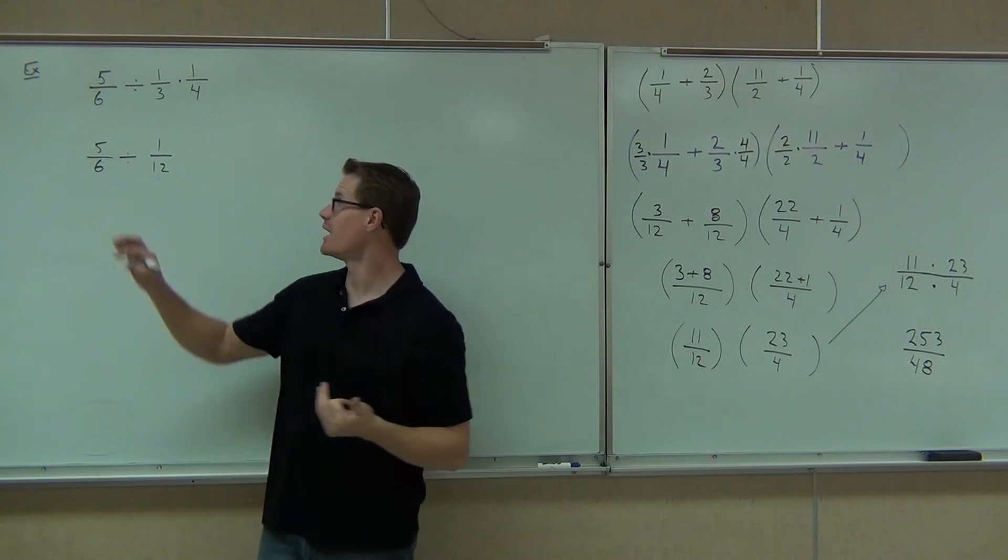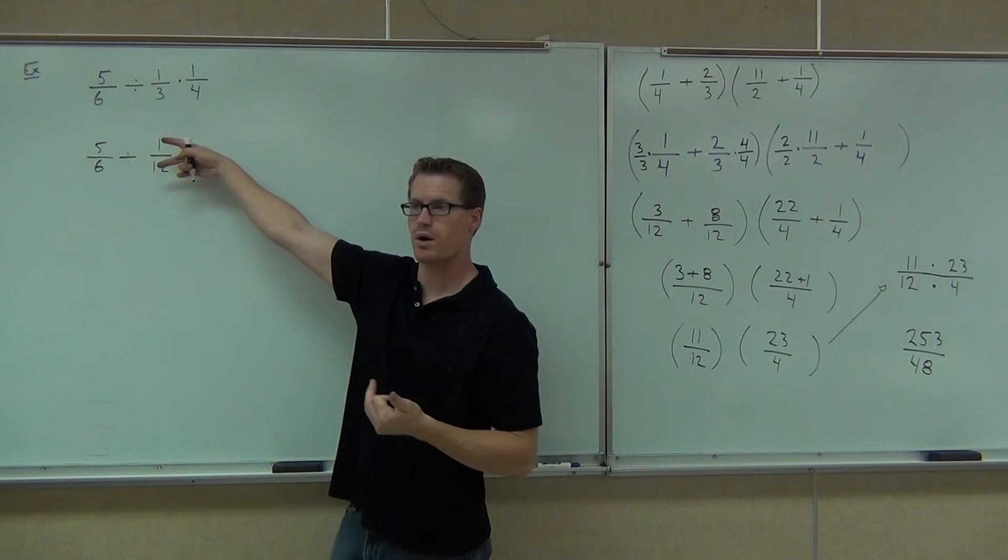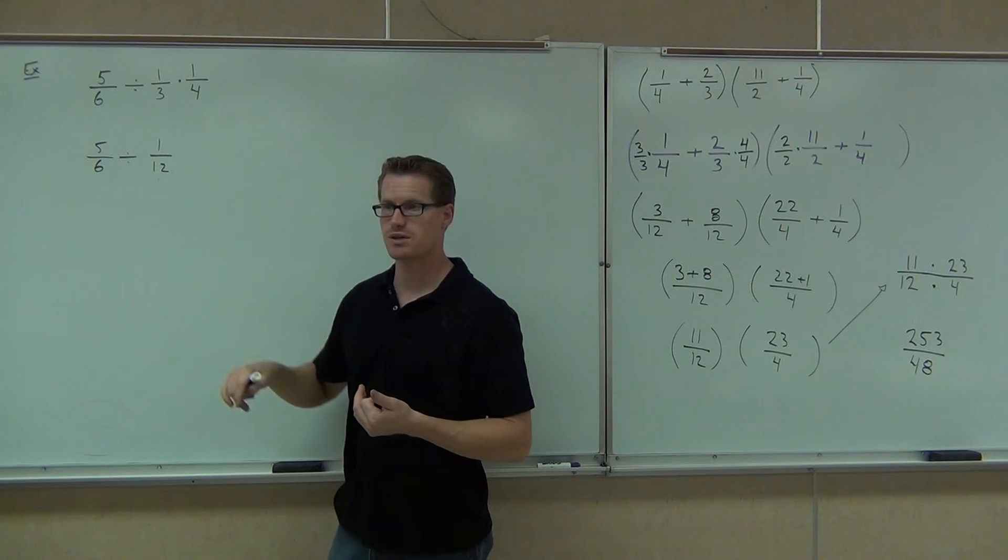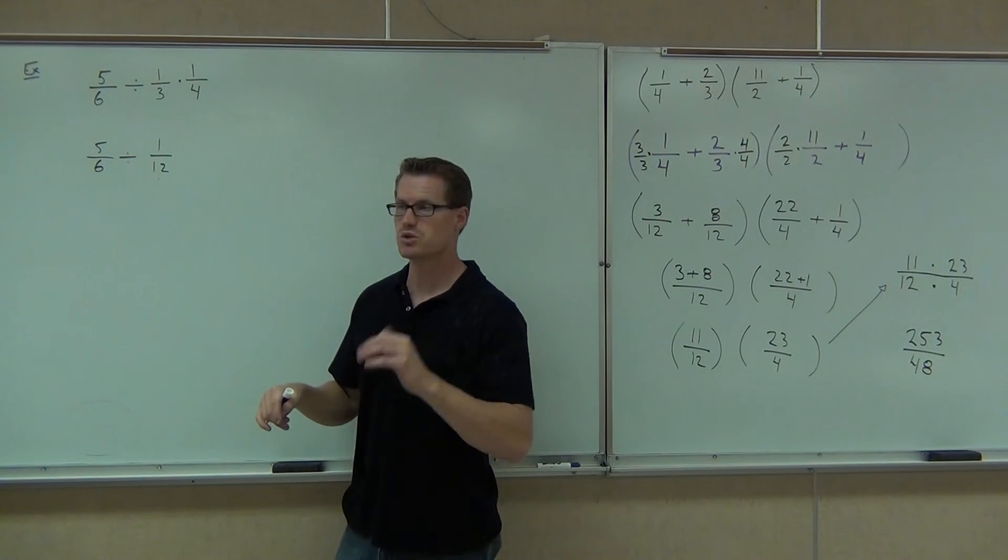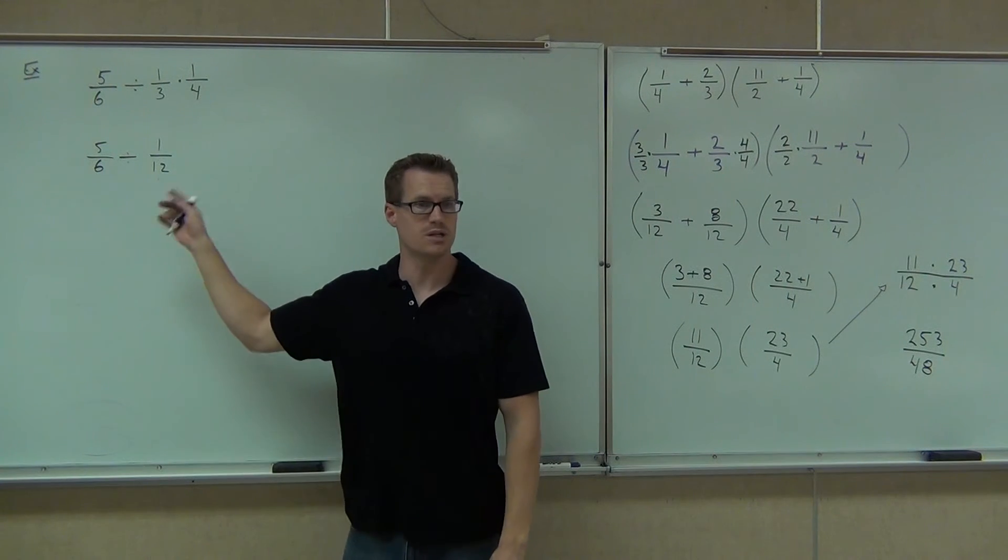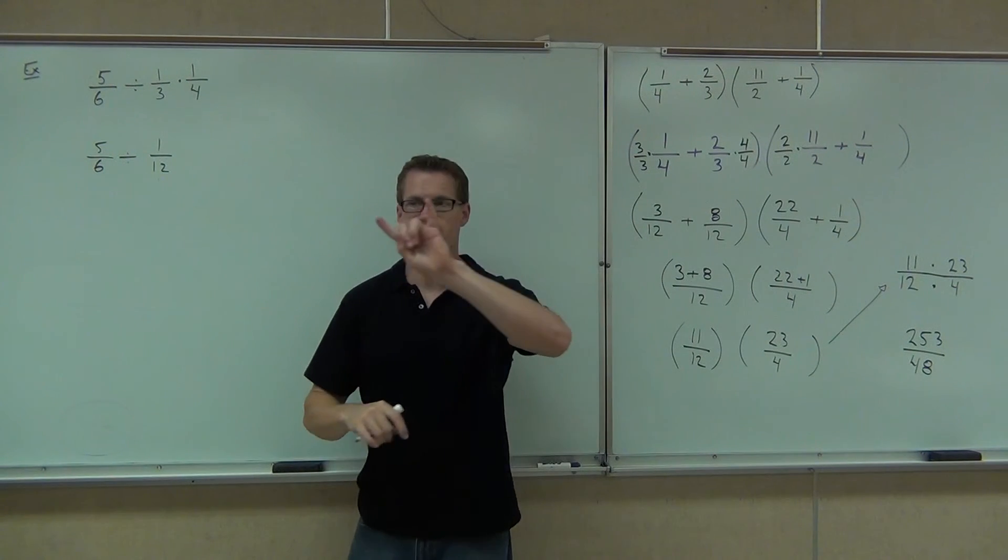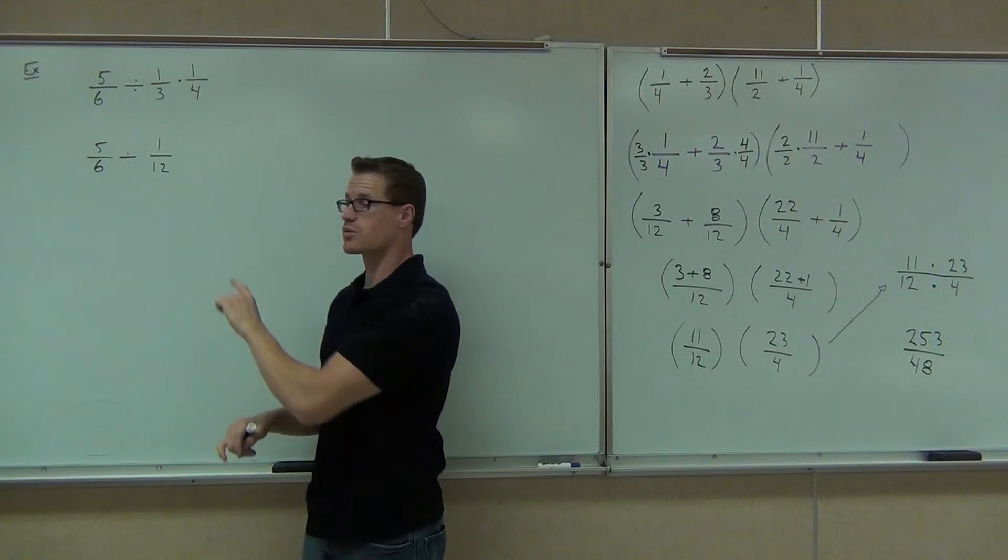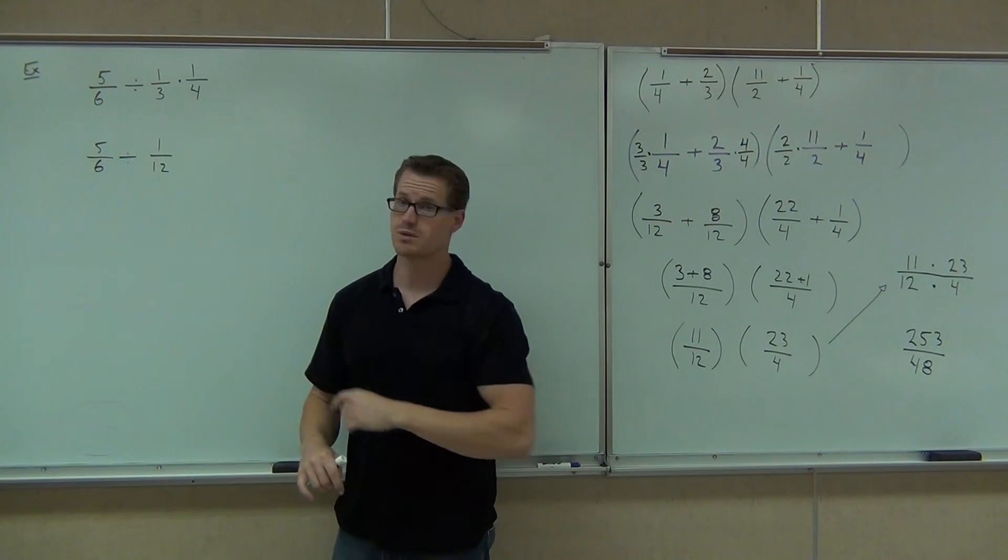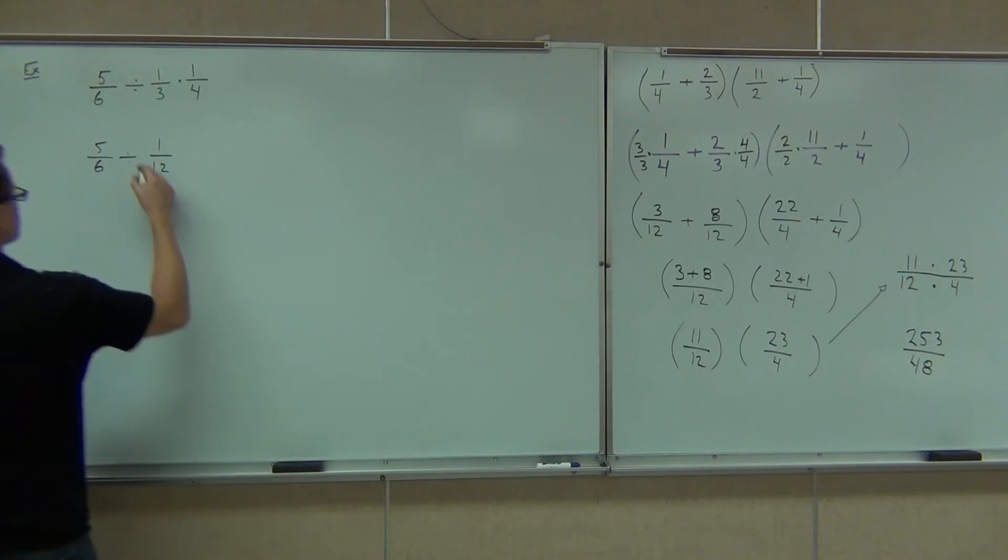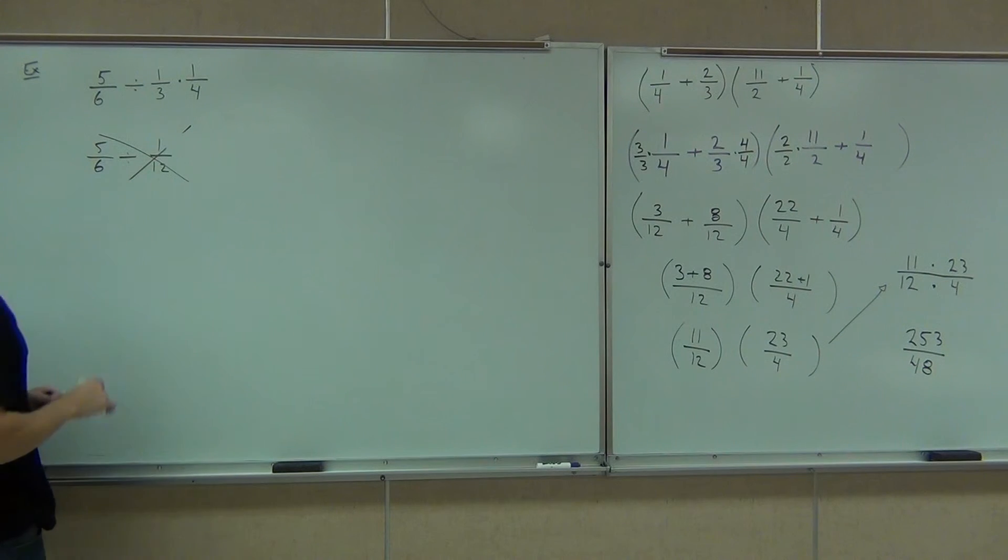People do this all the time. They'll go, oh, well, this is a pretty easy problem. This is 5/6 divided by 1/12. Can you see how easy that would be to do? If you're going fast, or if you really don't get the order of operations, or if you really think that multiplication comes before division all the time, you're going to do that. Are you getting the right answer? No. Definitely not. Because right now, you'd be multiplying by 12 over 1, right? You'd simplify the 12 with a 6. You'd get 5 times 2. You'd get 2 over 1 is your answer. If you did it this way, you'd get the answer 2.